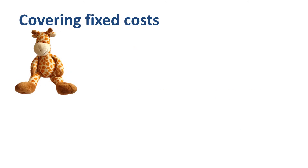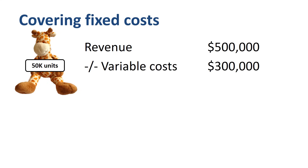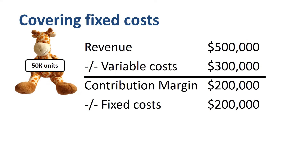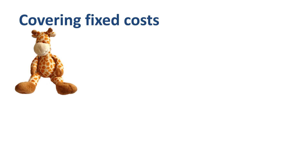We need to produce and sell more units. How about 50,000 units? Revenue will be $500,000, variable costs $300,000, and contribution margin $200,000. We have $200,000 of contribution margin available to cover fixed costs. As the fixed costs are $200,000, they are now completely covered by the contribution margin. The company generates an operating margin of zero. When we produce and sell more than 50,000 units, the business will be in the win zone.